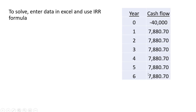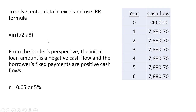So entering the data in Excel, I'm going to enter it like this. This is the formula: =IRR. And then you can just use your mouse to highlight the cash flows. Notice I have a minus $40,000 here.